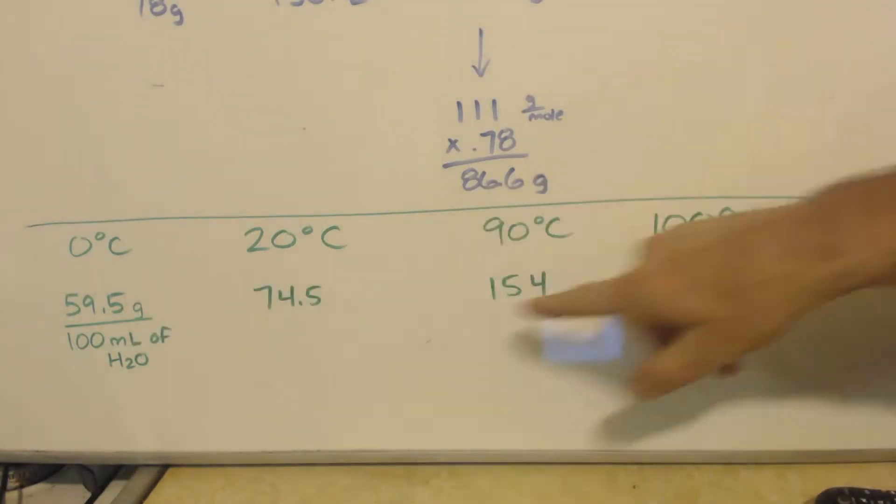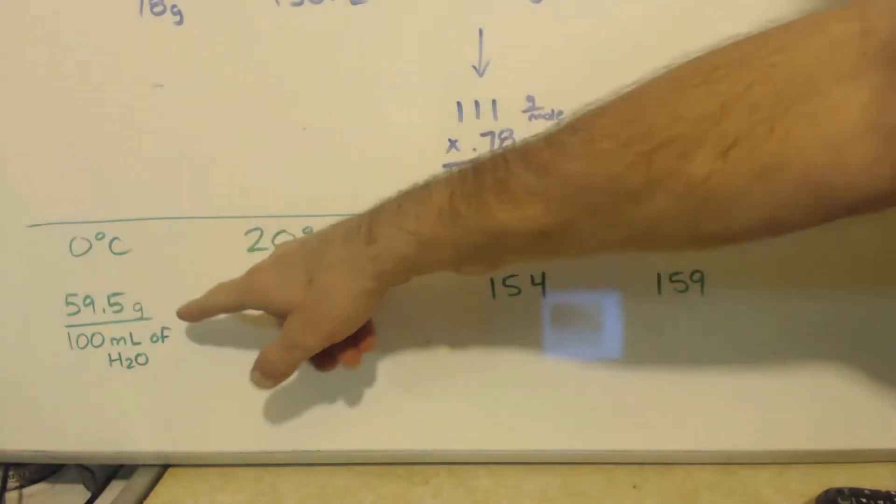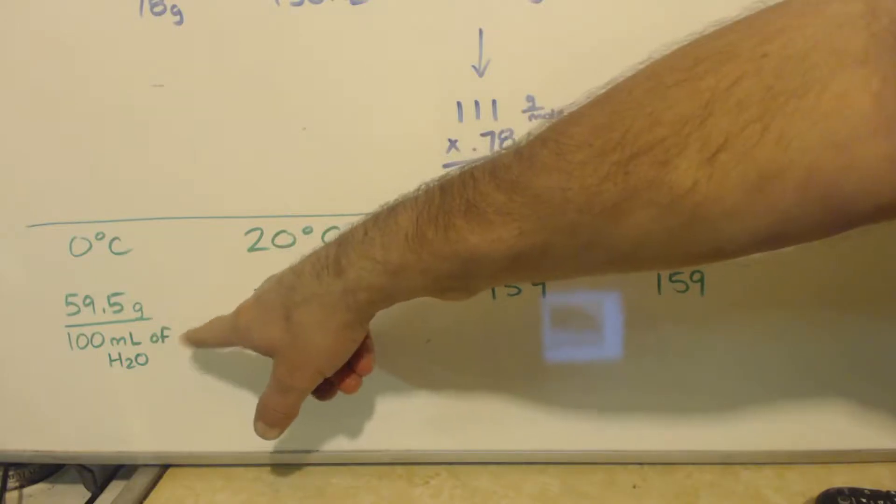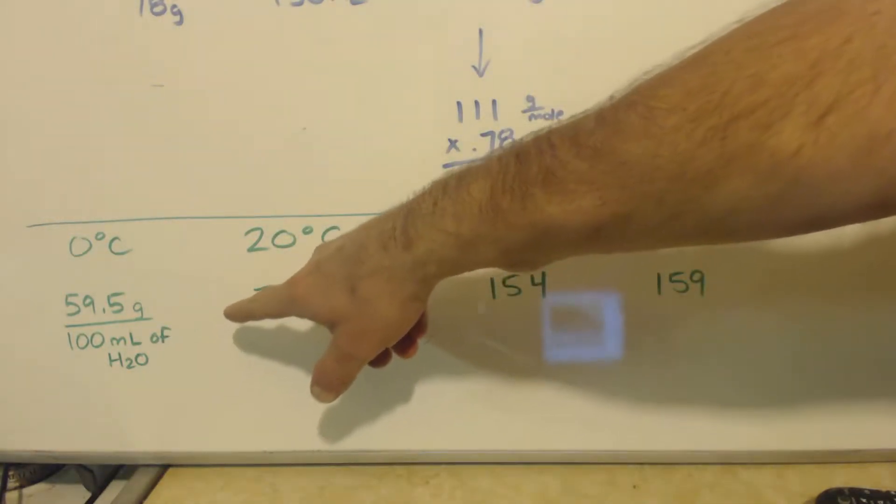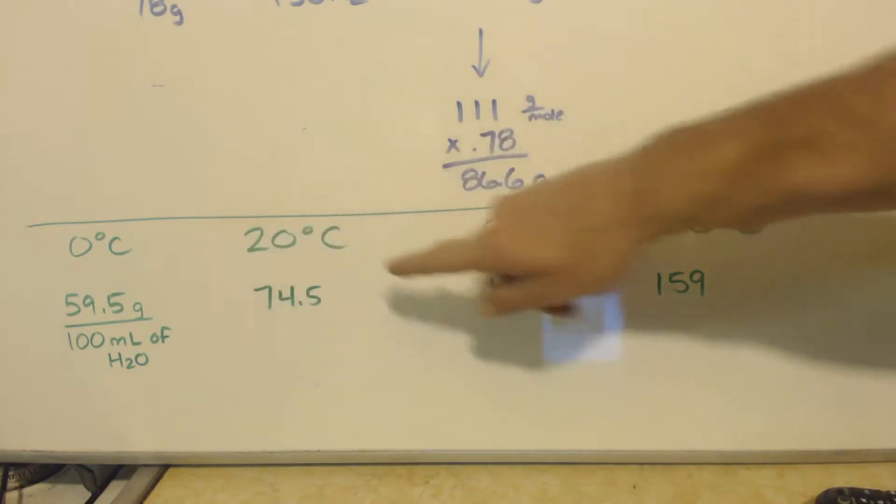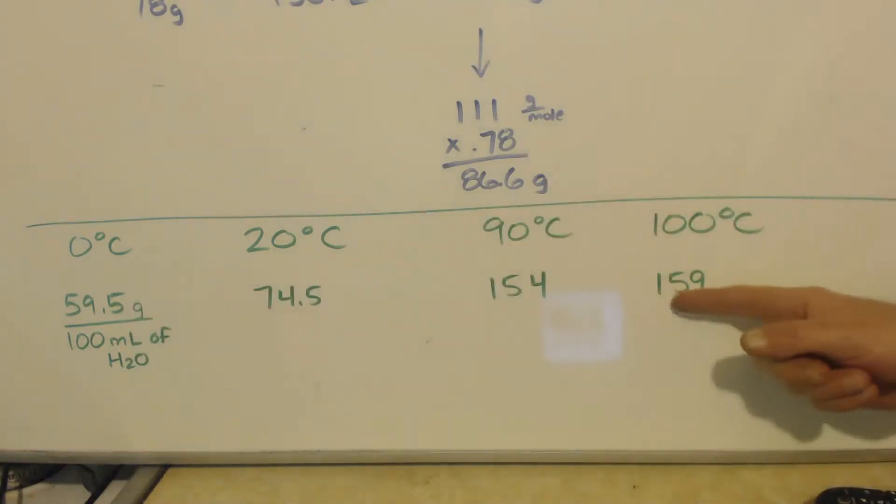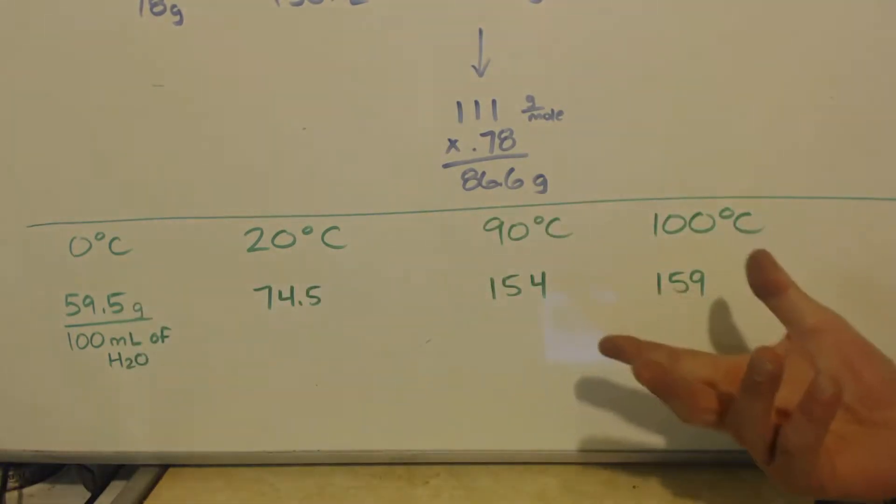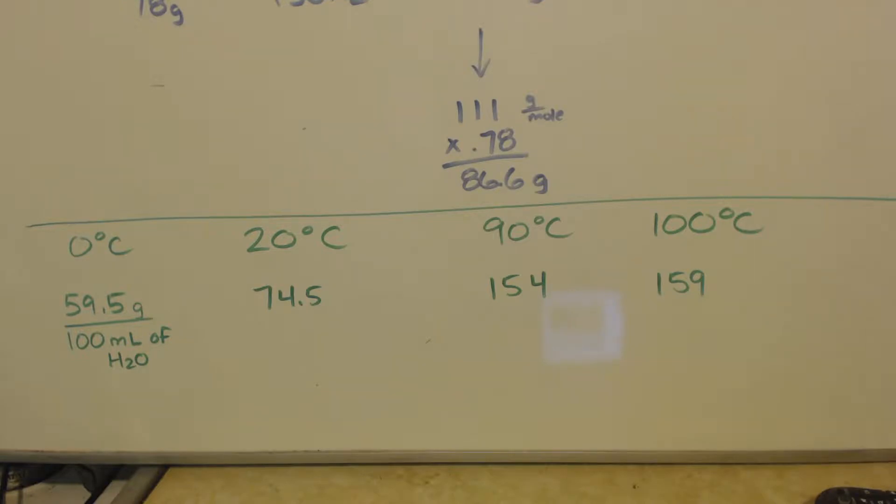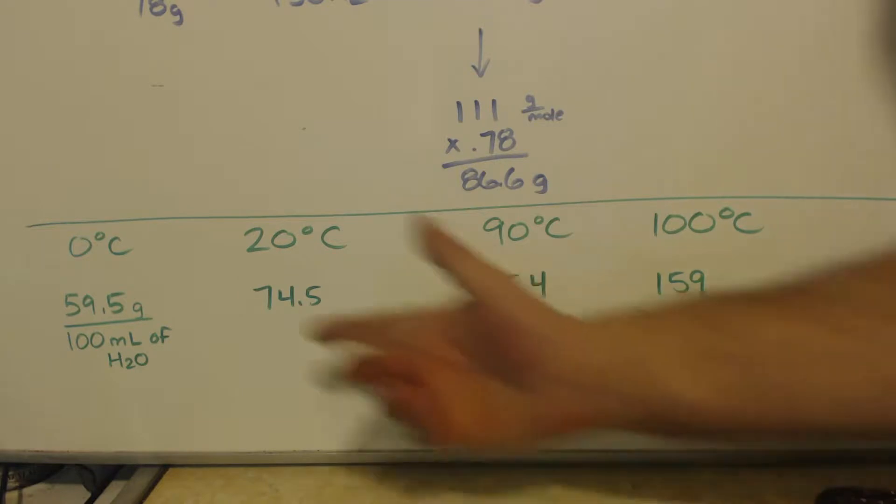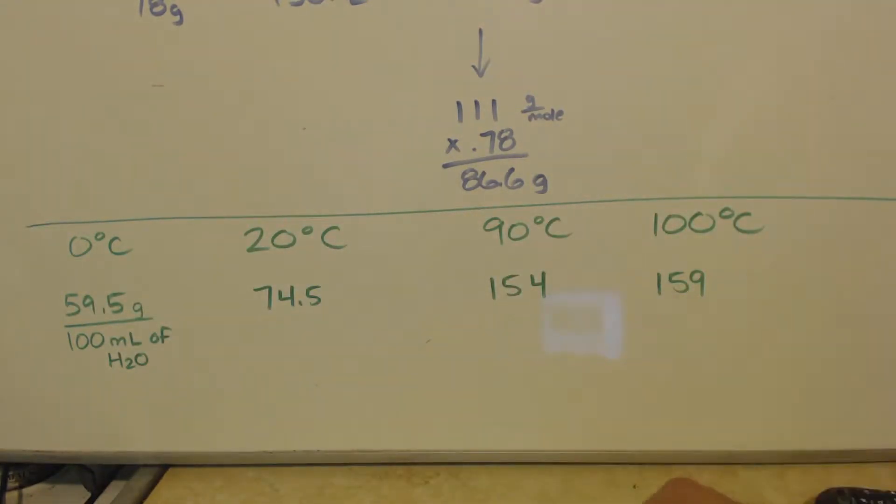Here's some solubilities of calcium chloride: 59.5 grams per 100 milliliters of water at 0°C, 74.5 at 20°C, 154 at 90°C, and 159 at 100°C.